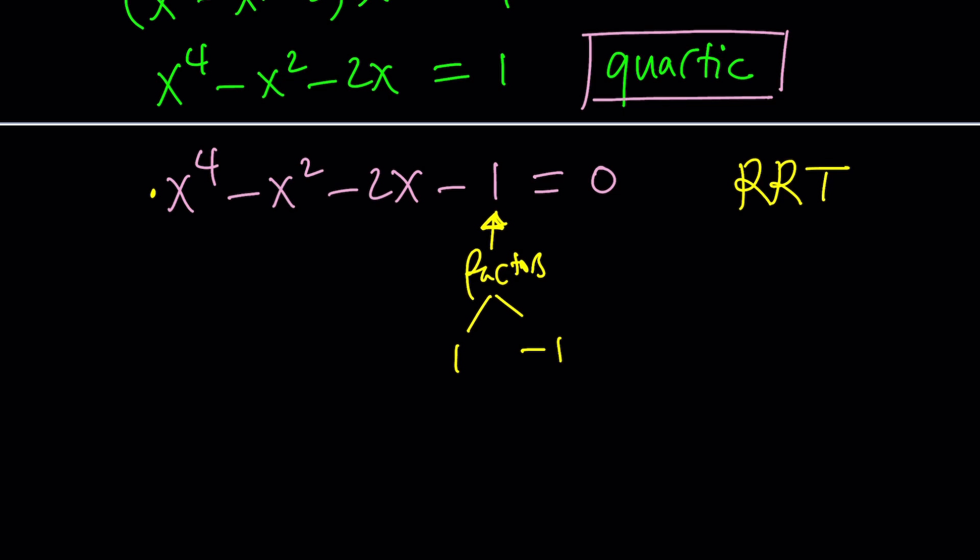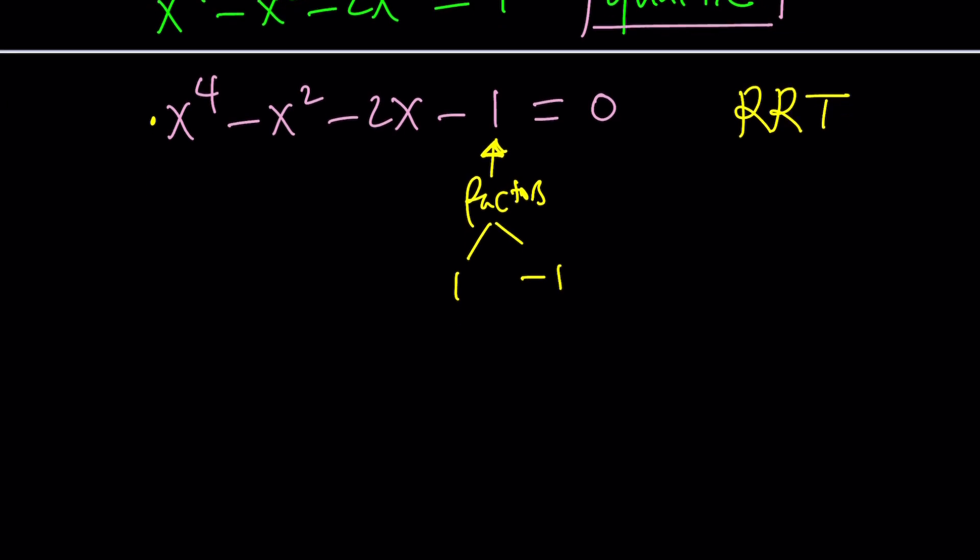If one of them can be a solution, they're basically potential solutions, then we're good. Let's plug it in. If x is one, what happens? One minus one minus two minus one. These two cancel out, we end up with negative three. So negative one is not a solution. What about negative one? Let's check it out.